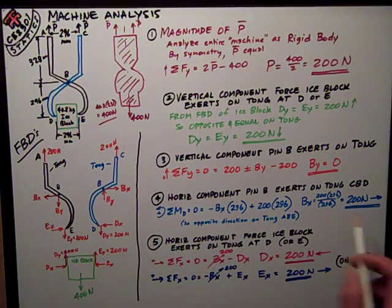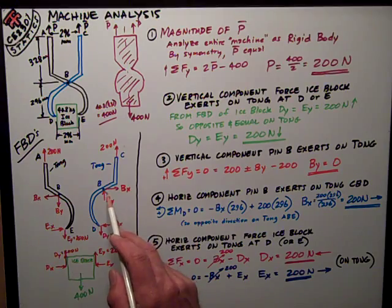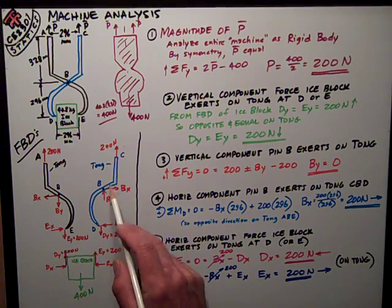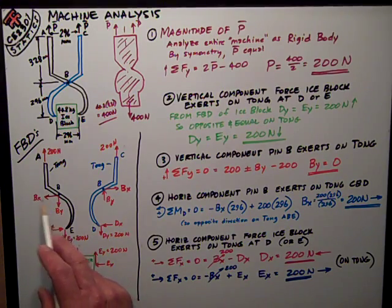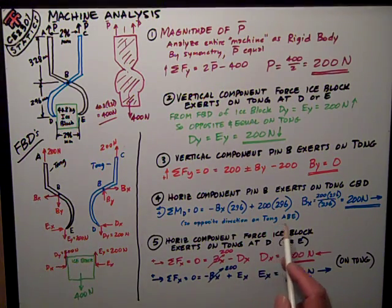The positive means my sign assumption was correct, to the right on member CBD, and it's going to then be the opposite direction, to the left on tong ABE.